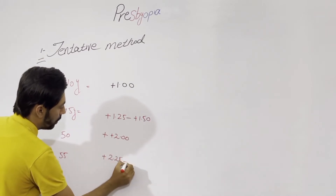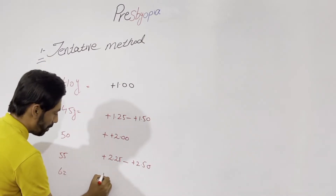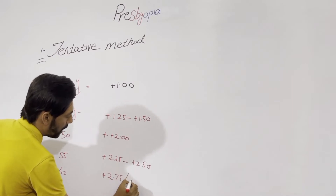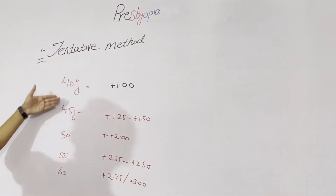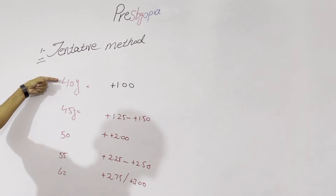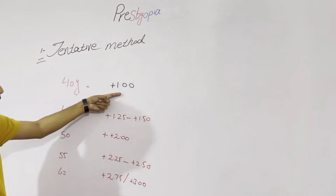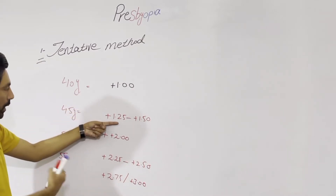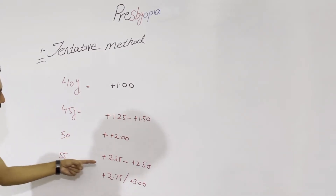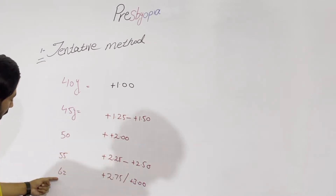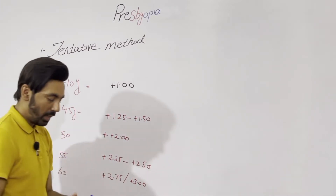At age 60, the expected near add value would be plus 2.75 to plus 3.00. To summarize: at 40 years — plus 1.00; at 45 years — plus 1.25 to plus 1.50; at 50 years — plus 2.00; at 55 years — plus 2.25 to plus 2.50; and at 60 years — plus 2.75 to plus 3.00.